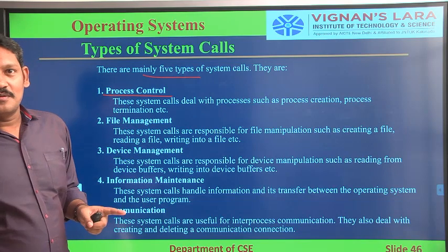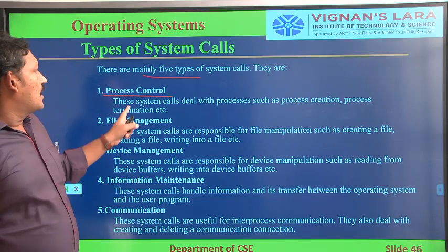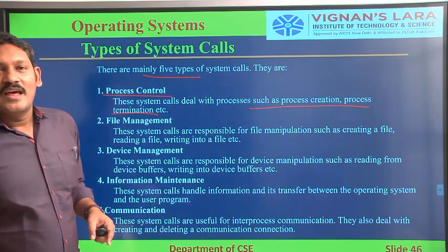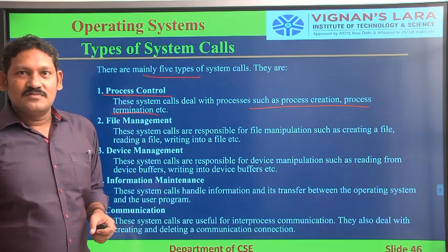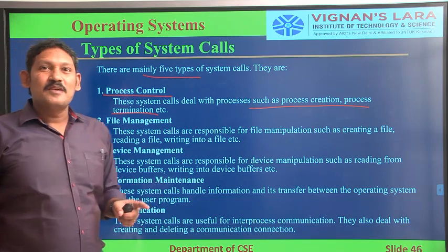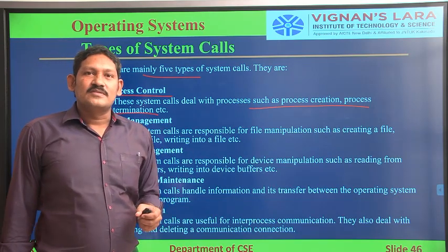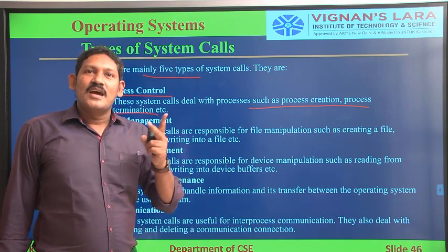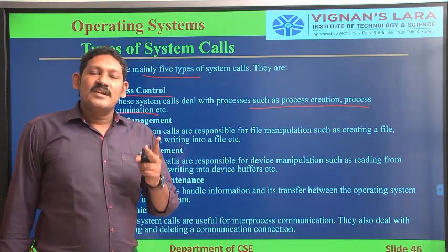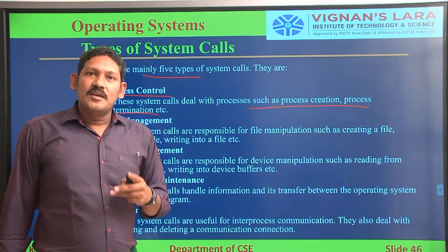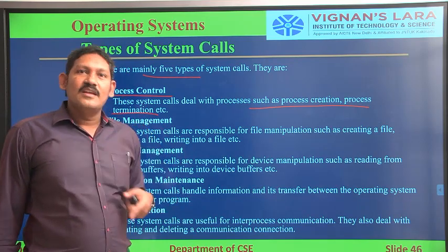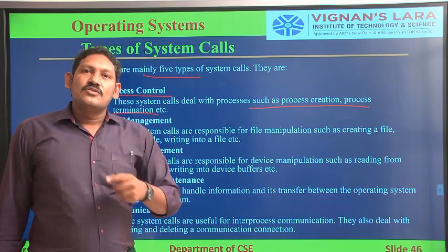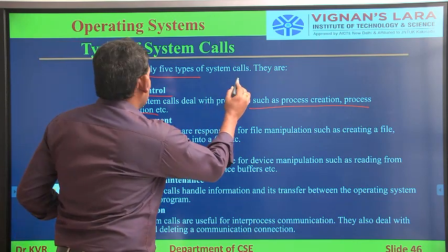The process control system call is useful to deal with processes such as process creation, process termination, etc. When we create a process, we perform different operations on it: creating a process and placing it in the ready state, then the execution state. While executing, if it needs any data, it goes to the waiting state, then back to ready state, then execution again. If execution is complete, it is placed in the terminated state.